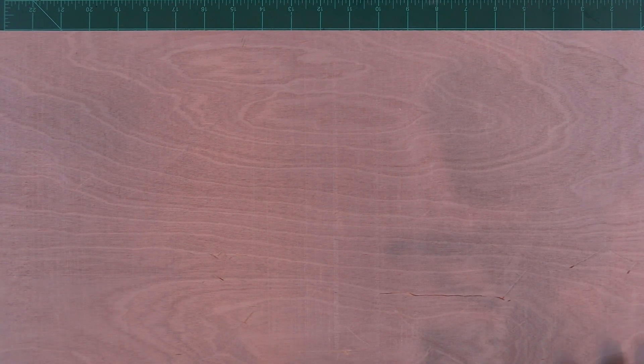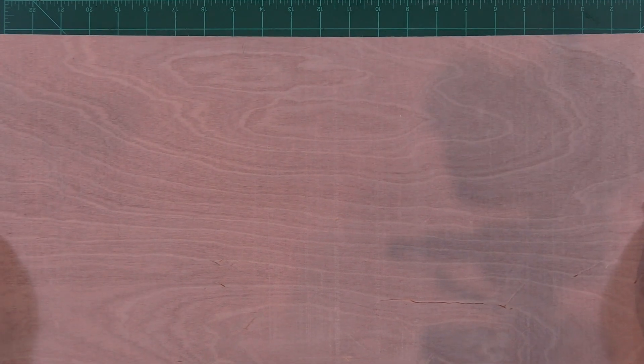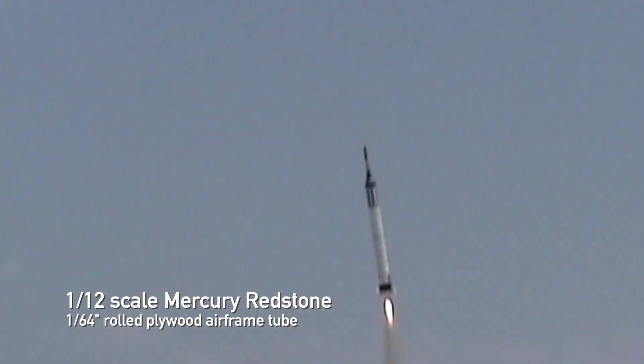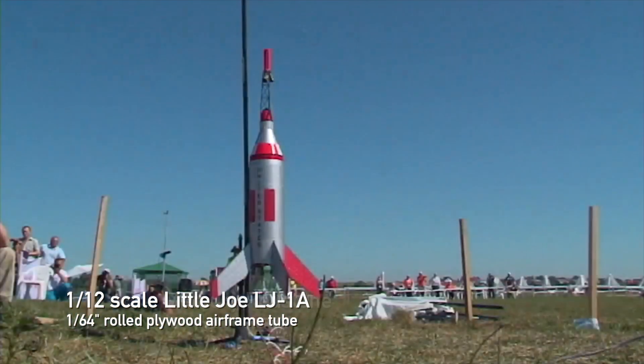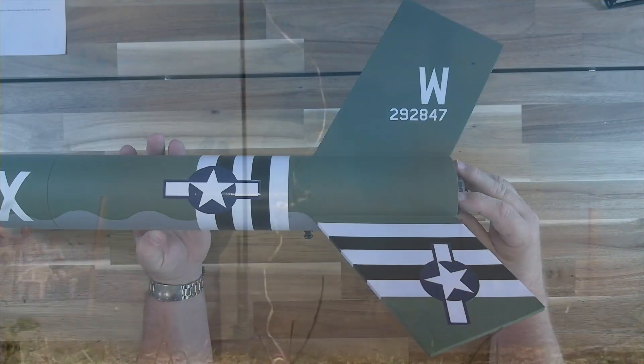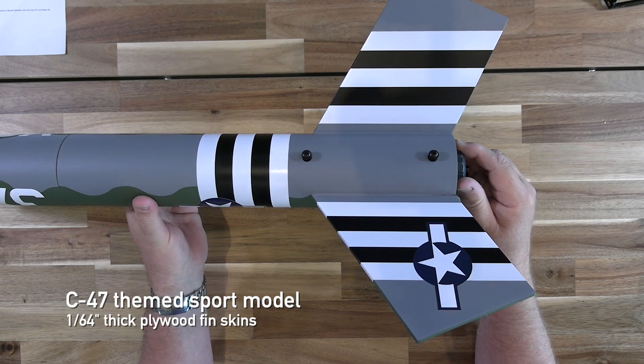This type of plywood is very versatile for rocket projects. The late John Pursley first told me about it a couple of decades ago after he used it to build the airframe tube for 1/12th scale Mercury Redstone models. That led to me building a 1/12th scale Little Joe model that I've flown in FAI competition as well as a C-47 themed Big Red Max model that I did recently.